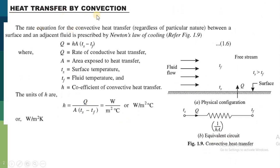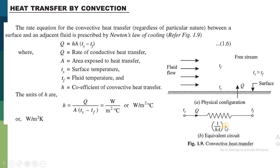Now let us understand the heat transfer by convection. Suppose this is a hot surface having temperature Ts — that is, temperature of the surface — and a fluid is flowing over this surface. It may be air or water; it is a free stream movement. Tf is the temperature of this fluid. The temperature of this surface is greater than the fluid, so heat will transfer from the surface to the fluid. We can convert the same physical configuration into an equivalent electrical circuit, where to transfer this heat, there is some resistance called thermal resistance, represented by 1 upon HA.